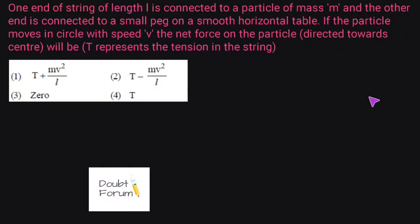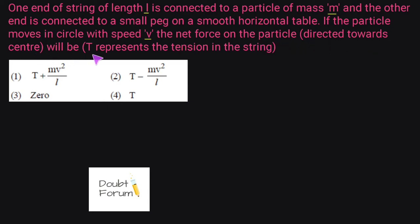Hello friends, welcome to doubt forum. This question is: one end of a string of length L is connected to a particle of mass M. The other end is connected to a small peg on a smooth horizontal table. If the particle moves in a circle with speed V, the net force on the particle directed towards the center will be. T represents tension in the string and four options are given.